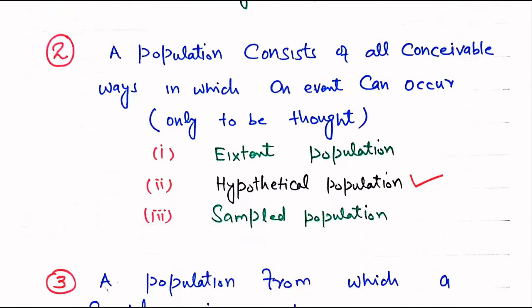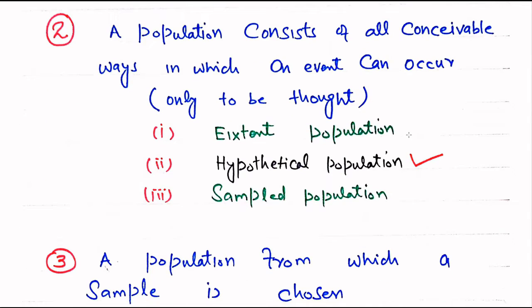Question number 2. A population consists of all conceivable ways in which an event can occur. Conceivable ways means any event which comes from thought. The three choices are Existent population, Hypothetical population, or Sampled population. The right answer is Hypothetical population.